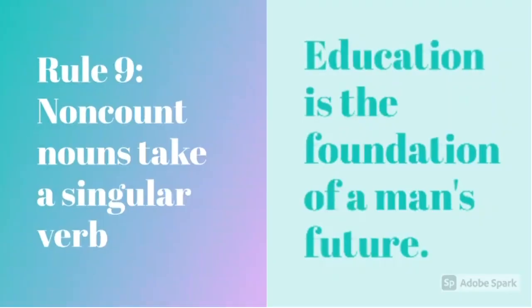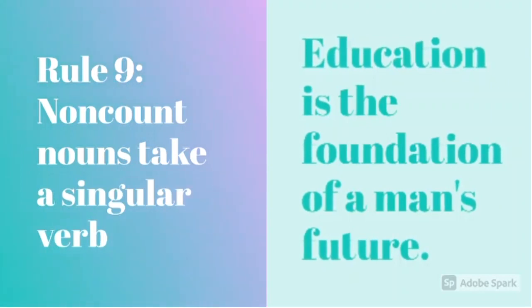Rule 9 is, non-count nouns take a singular verb. An example is, education is the foundation of a man's future. Here, education is a non-count noun, so we are using is.